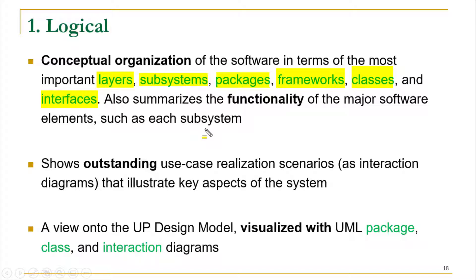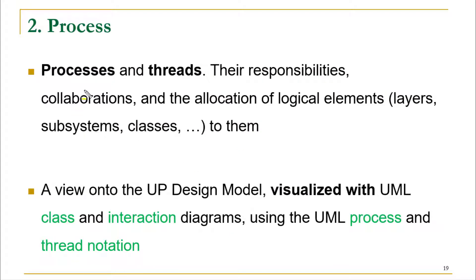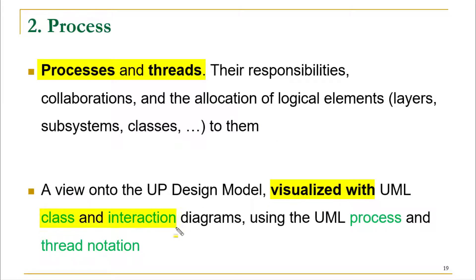For every type of view I will explain how you can visualize that view. A view consists of two parts: the diagram and the text. For the logical view, you can visualize it with the help of package, class, and interaction diagrams. Then comes the process view, which mainly focuses on processes and threads — all multi-threading concepts being implemented in your system would appear in this view, visualized with UML class and interaction diagrams.